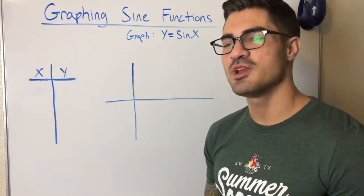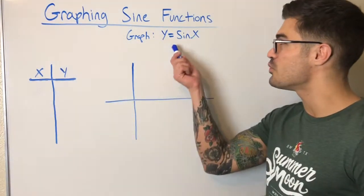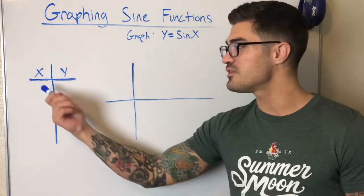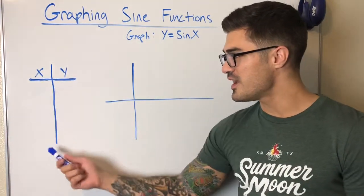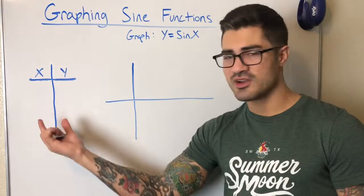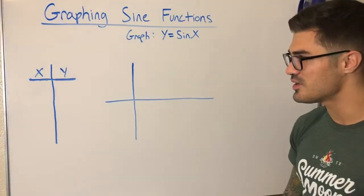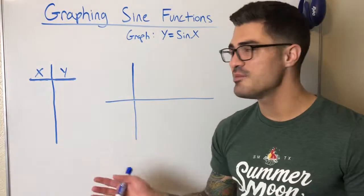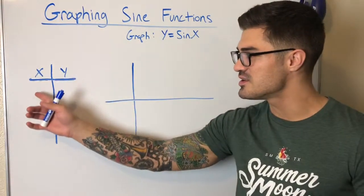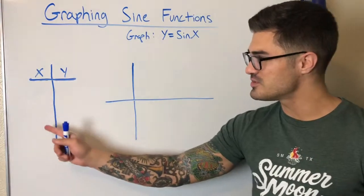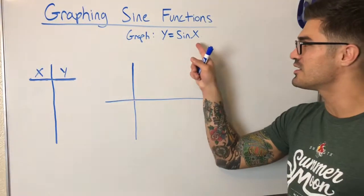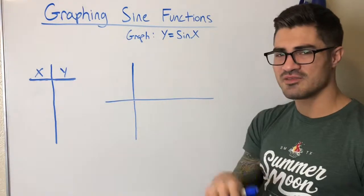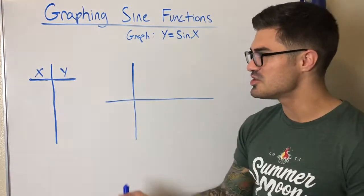Let's get started graphing y equals sine x. I can use a table to graph any function by plugging in values for x to get coordinate pairs to plot. It's not always the most efficient way, but we can do it. I'm going to be smart about which x-values I pick — I don't want to pick values like negative one or two point five, because then I'd need a calculator.